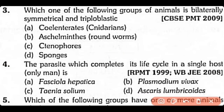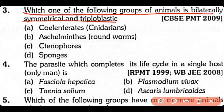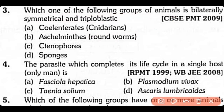Question 3: Which one of the following groups of animals is bilaterally symmetrical and triploblastic? Options include Aschelminthes, ctenophores, and sponges. The correct answer is Option B — Aschelminthes, or roundworms, which have bilateral symmetry and are triploblastic.